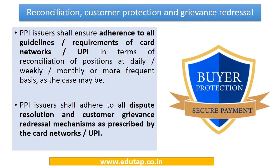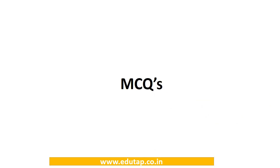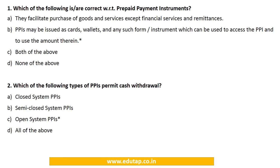UPI is an instant real-time payment system developed by NPCI that allows fund transfers between bank accounts on a mobile platform. For wallets, money can similarly be transferred from one wallet to another through UPI. RBI has also kept consumer interests in mind: PPI issuers must adhere to all guidelines of card networks and UPI for reconciliation on a daily, weekly, or monthly basis, and must follow prescribed dispute resolution and customer grievance redressal mechanisms.